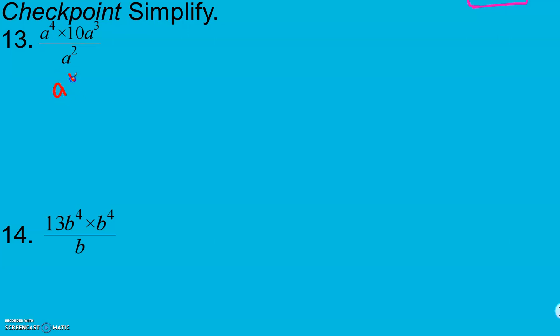Here, I have a to the fourth times 10 times a cubed over a squared. I always want to make sure that my numerator and denominator are completely simplified before I start moving between them. And my numerator here is not. I have powers with the same base, so I keep my base, and I can go ahead and add those exponents.